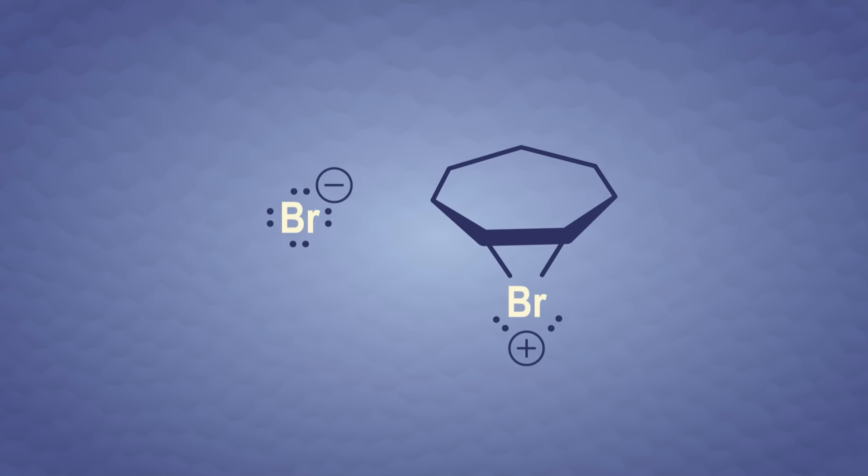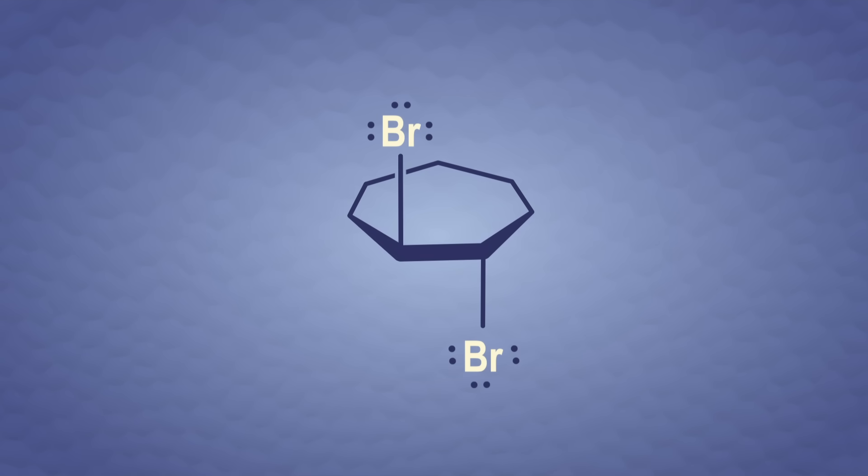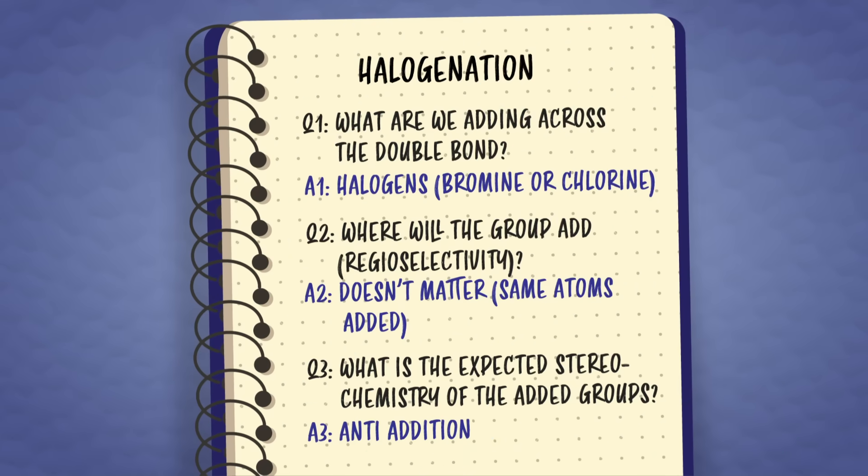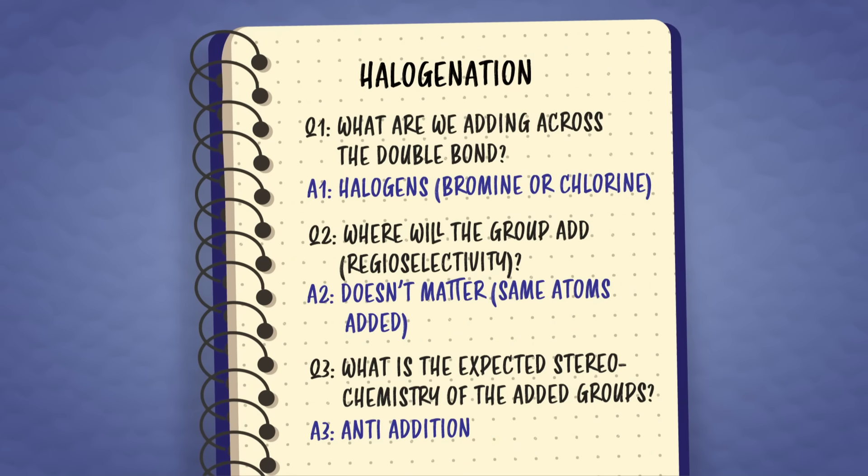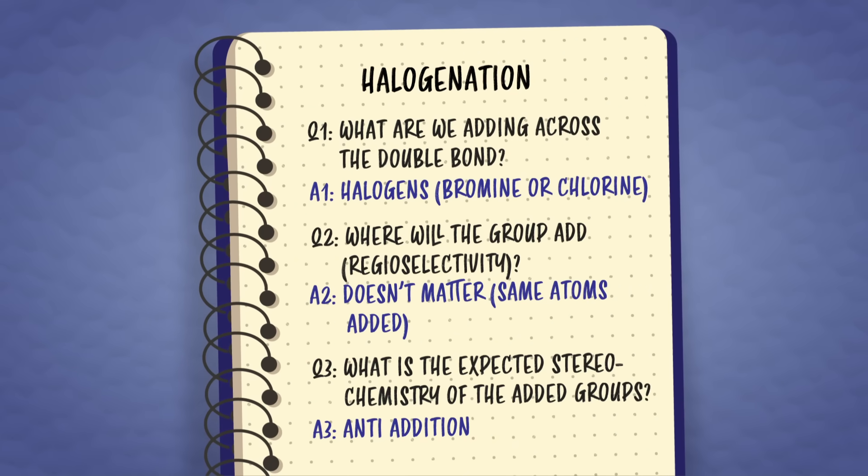The bromonium ion is a major contributor to the resonance hybrid and blocks the face of the ring. So, the remaining bromide ion is forced to attack the opposite side of the ring, and it's anti-addition. To sum up our combo key to halogenation, we've got this note card. We'll make one for all these reactions.